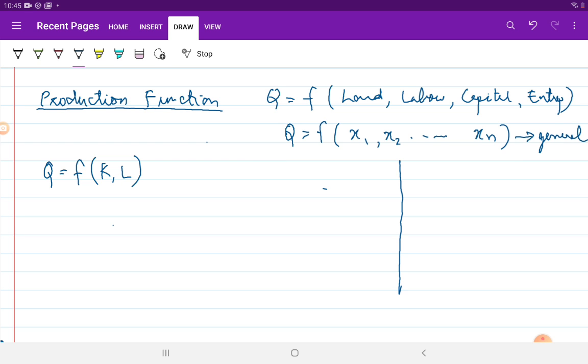The two-variable case was useful as it could be easily represented in terms of a graph such as this, with L on the x-axis and K on the y-axis.